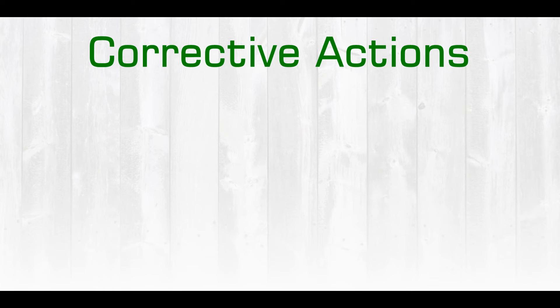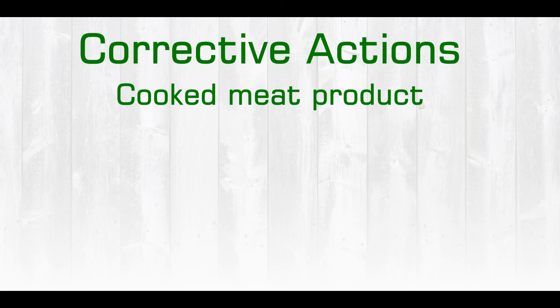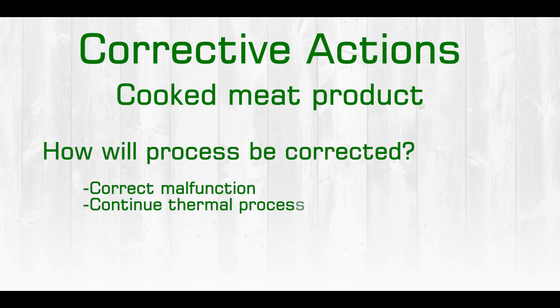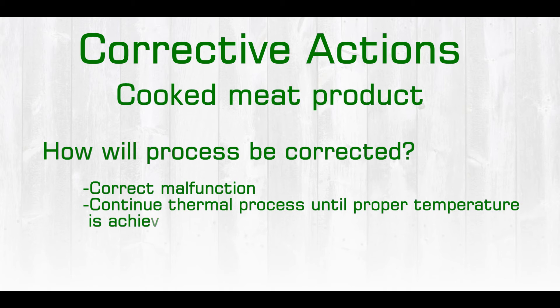An example of corrective actions for a cooked meat product would be to ask ourselves how will the process be corrected. We could correct the smokehouse malfunction or the oven malfunction, and then the thermal process would continue until the proper temperature is achieved, as long as it is within the time limit.